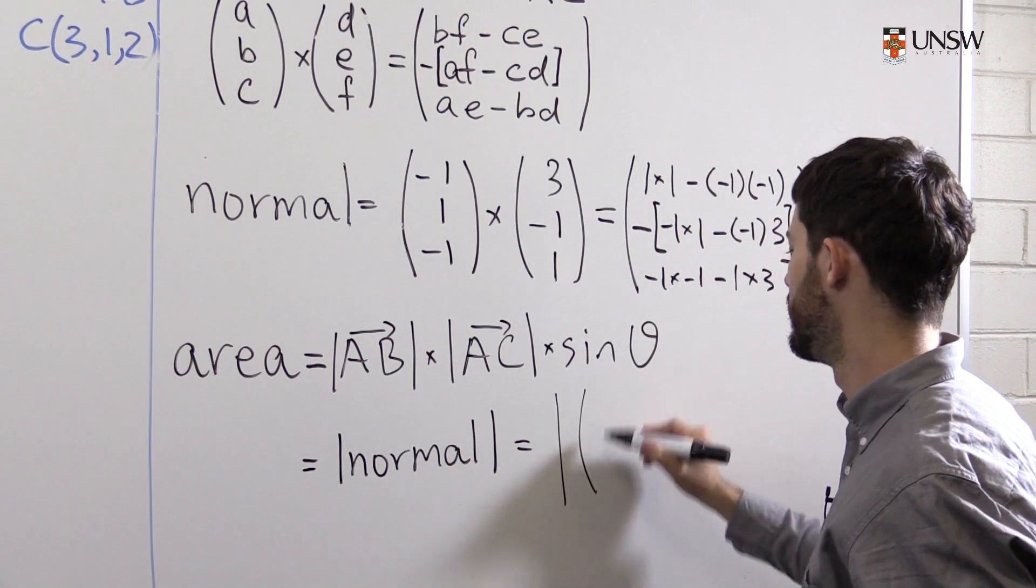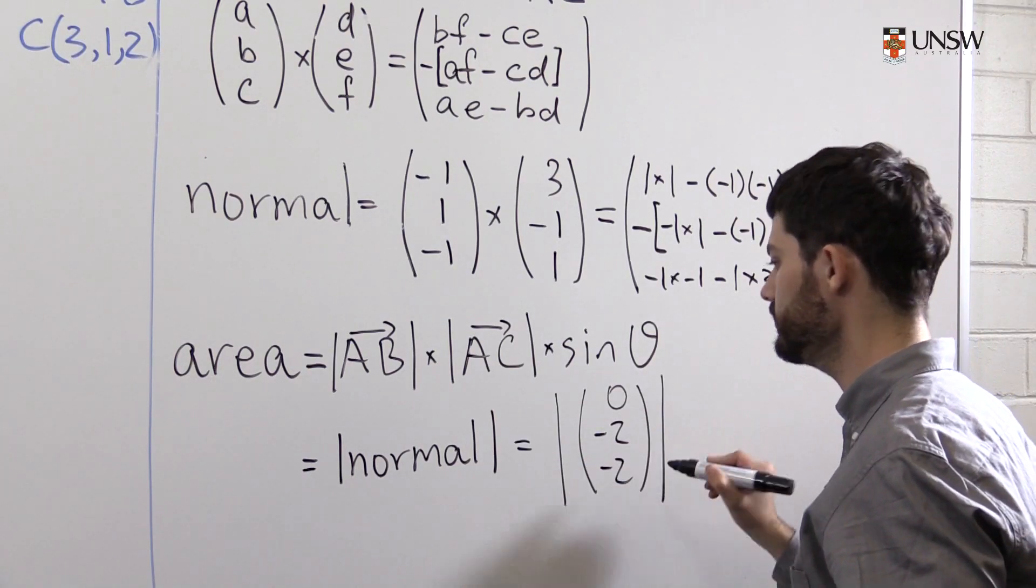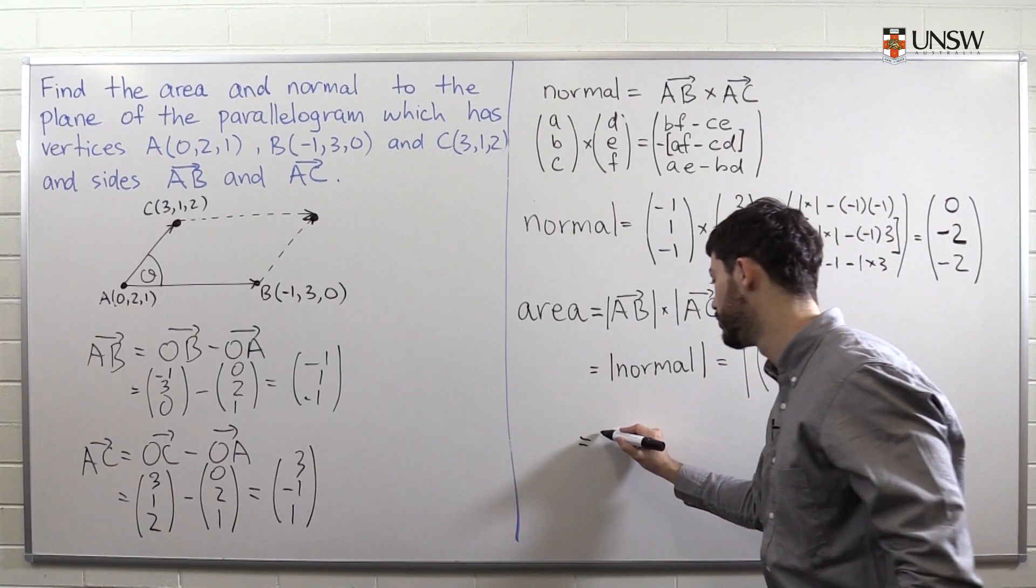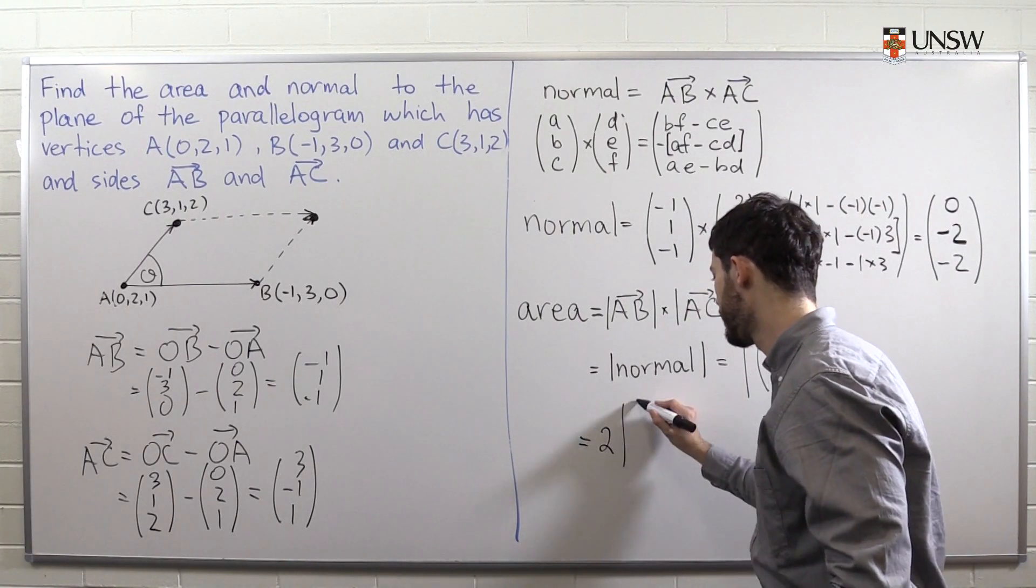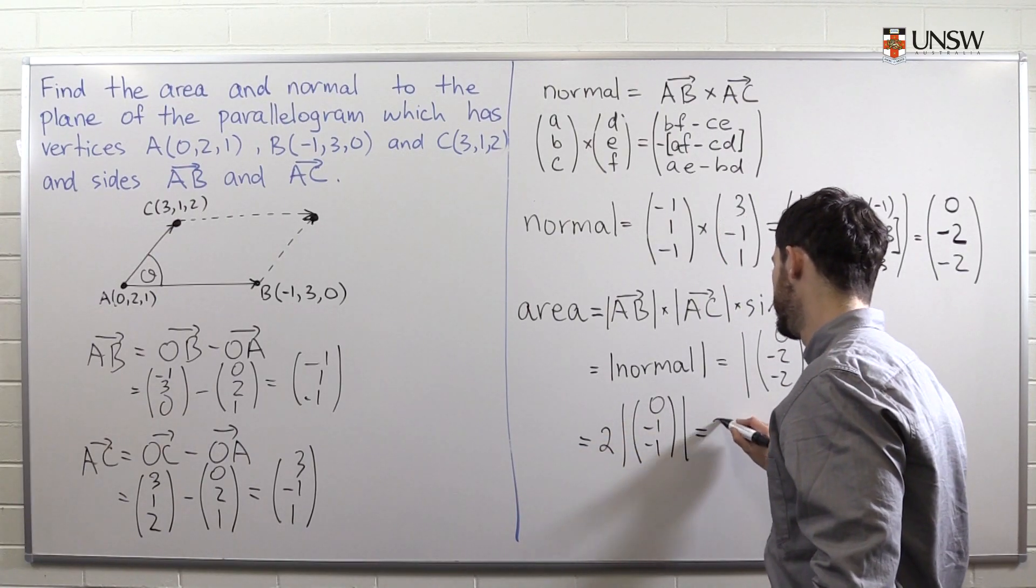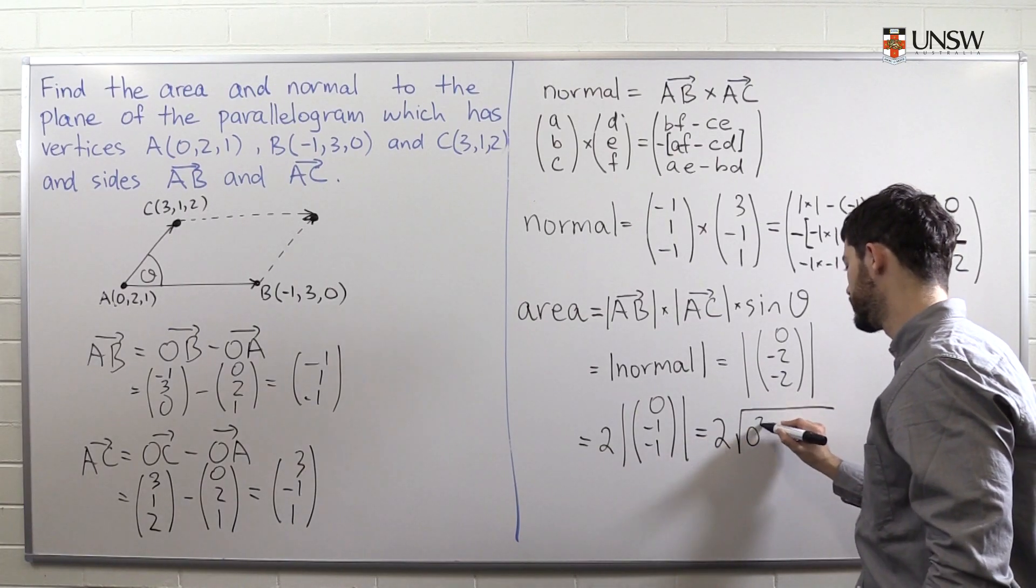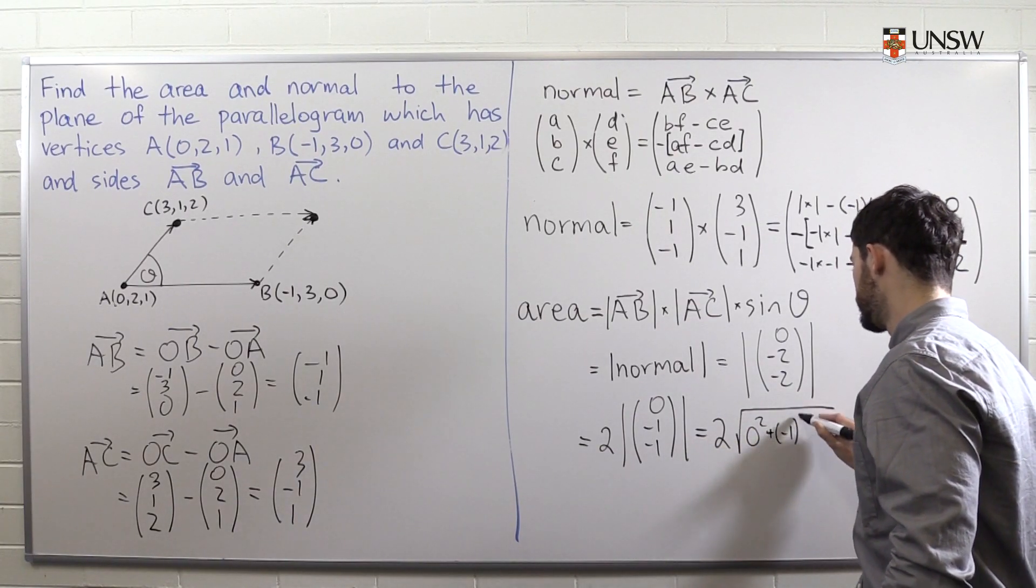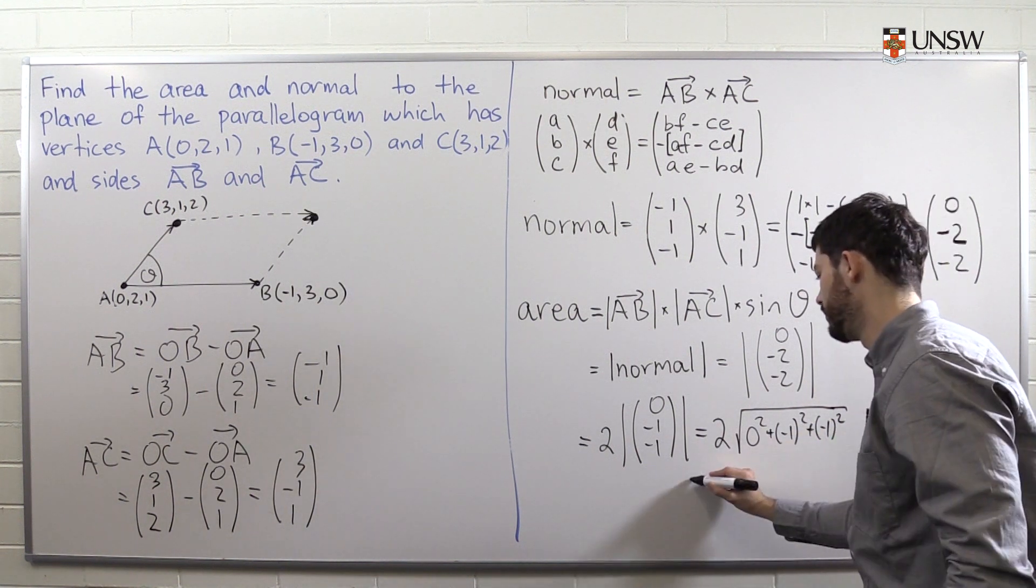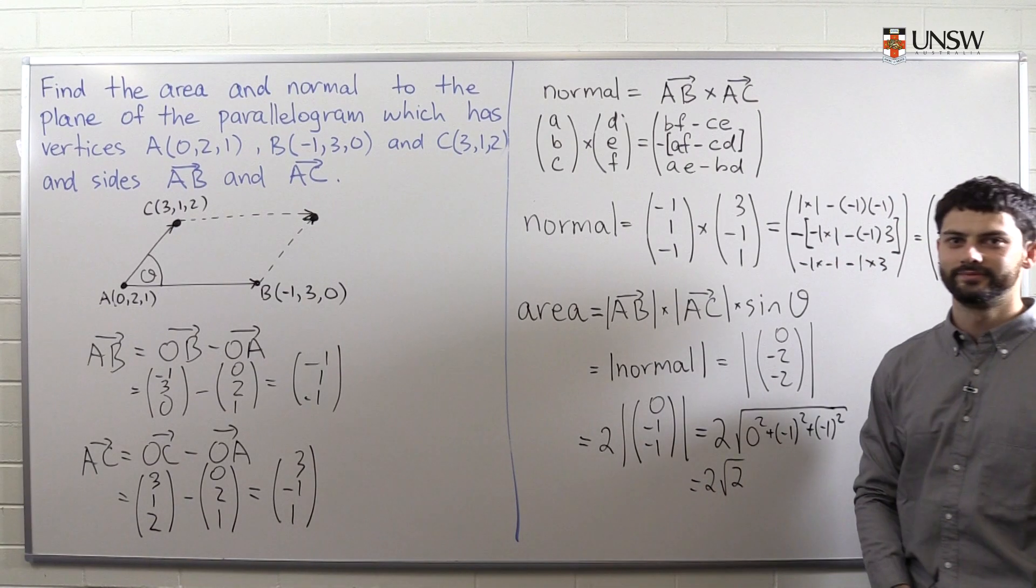So we find the length of (0, -2, -2). To make life a little bit easier for us, we're going to first pull out this two, leaving us with (0, -1, -1). And now this is just two times the square root of zero squared plus one squared plus one squared, which is two root two. Thank you.